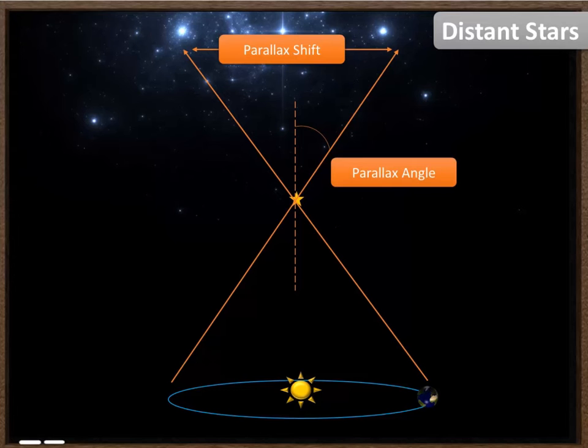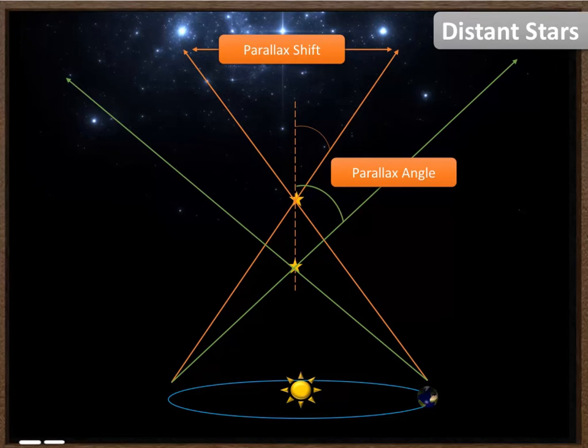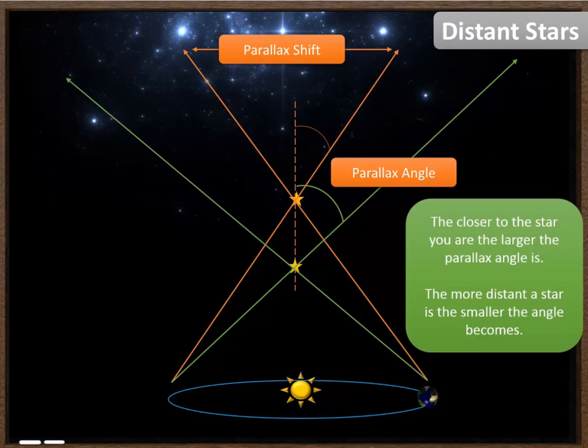We're now going to think about a slightly closer star and how that would be different. So there's our second star. We're going to do the same thing. So we look out from the Earth, we see where the star is and align it with some of those reference stars. We do the same six months later. You'll now notice that there is a larger parallax angle. The star has appeared to move by a much greater amount.